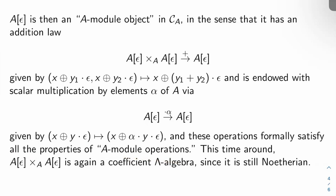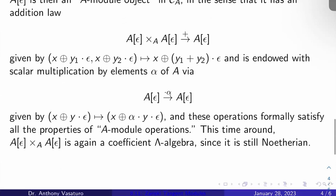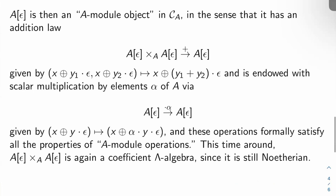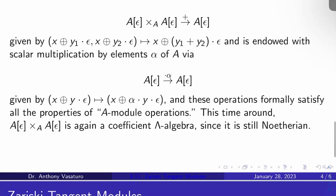This time around, A[ε] ×_A itself is again a coefficient Λ-algebra, so it is in the category, since it's still Noetherian. If you remember, we made a technical remark about this a couple of videos ago. You'd like your categories to be closed under products whenever possible, for reasons that will become clear in future videos.